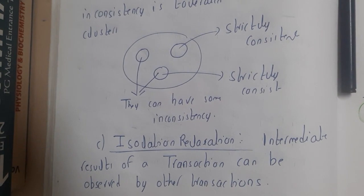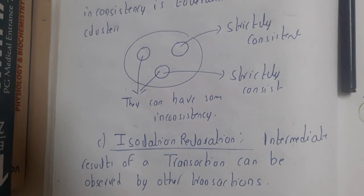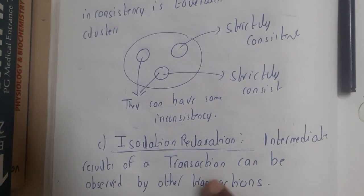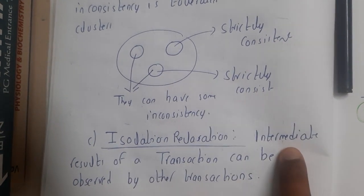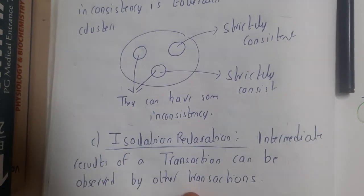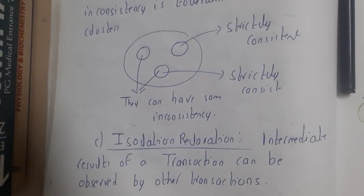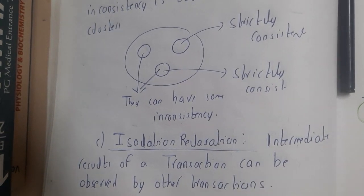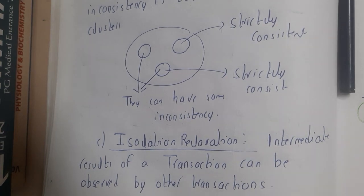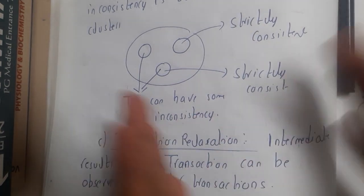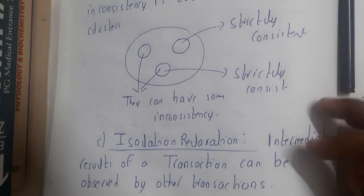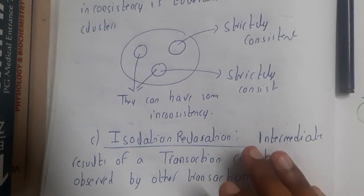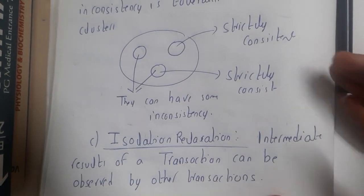The next thing is isolation relaxation. In isolation, intermediate results of transactions can be observed by others. Basically, in a normal transaction in DBMS we want to hide them, but here we want to show them. That is a major difference here. We want to show whatever transactions have been going on. Intermediate results should be shown, like this message has been sent successfully, send the next message - acknowledgments and all those things should be possible.